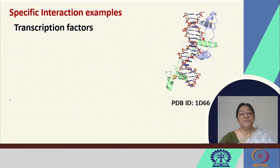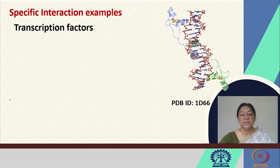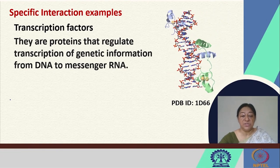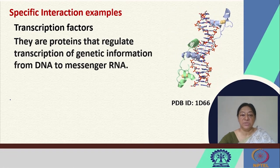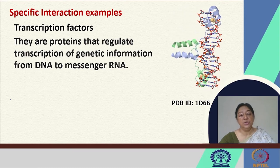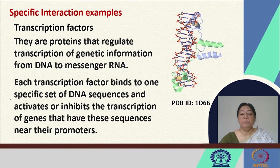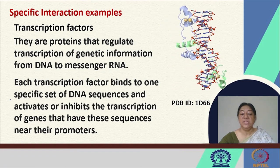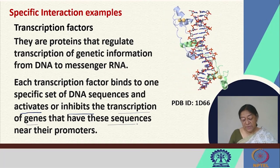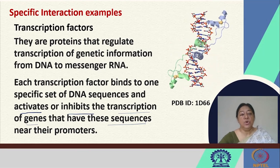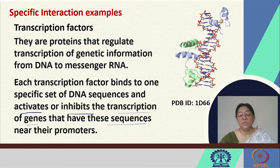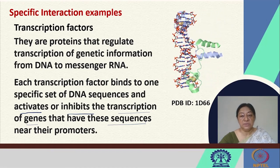Other specific interaction examples include transcription factors — proteins that regulate the transcription of genetic information from DNA to messenger RNA. Each transcription factor will bind to one specific set of DNA sequences only, and in the process it will activate or inhibit the transcription of genes that have these sequences near the promoters. Transcription factors bind to a specific set of DNA sequences only to bring about the biological process they are intended to perform.